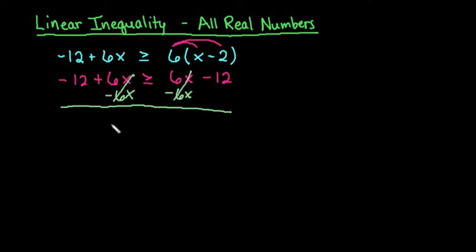So my variable cancels out and I'm left with a statement -12 ≥ -12. Since this has equality, and we can see that this is equal, our variable has canceled out. Since this is a true statement, that means that any number that I plug into this would make this statement true.